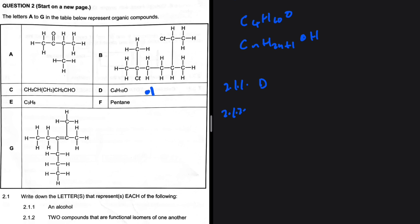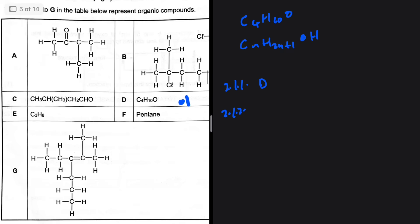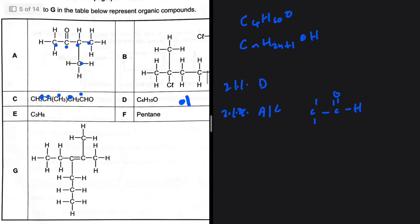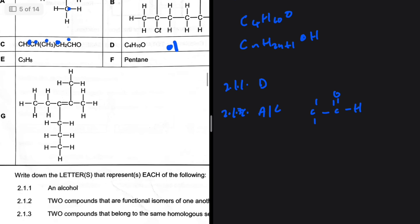E is an alkene as well, so we're only left with A and C. Let's take a look — A has five carbons and is a ketone. C also has five carbons — it ends with a carbon double bond oxygen and a hydrogen, making it an aldehyde. So the answer to 2.1.2 is A and C — two compounds that are functional isomers.